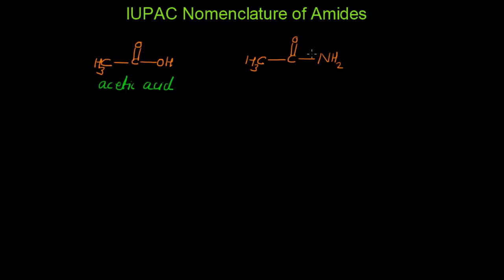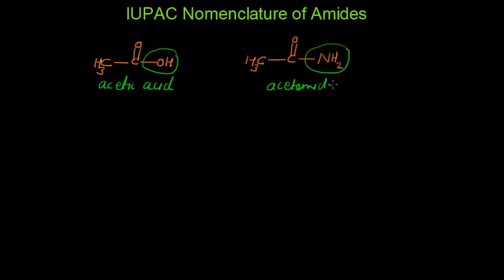If you see the common name of this compound, this is CH3C double bond O NH2. Here, this OH is replaced by NH2. So the common name is acetamide. It means that the '-ic acid' ending is replaced with '-amide' in the common naming of these compounds.